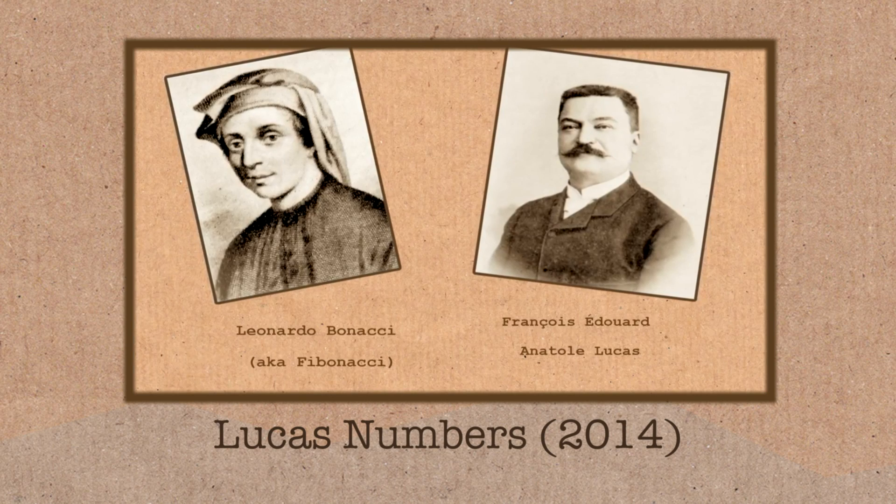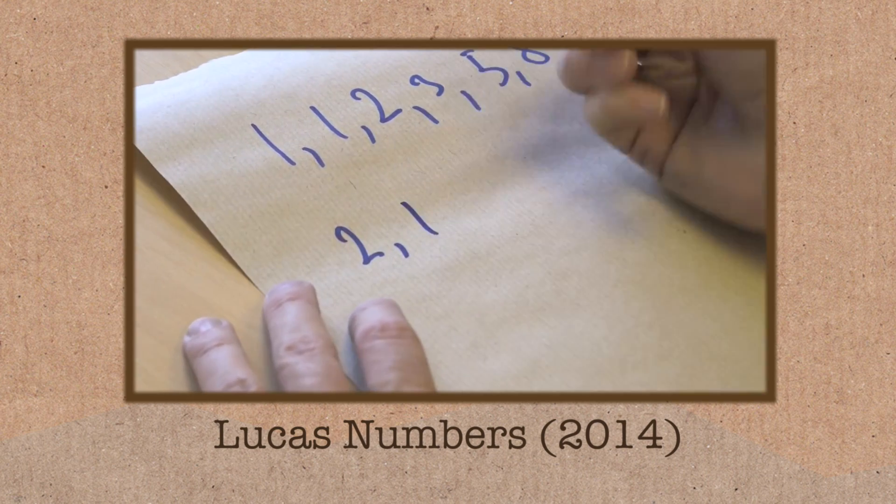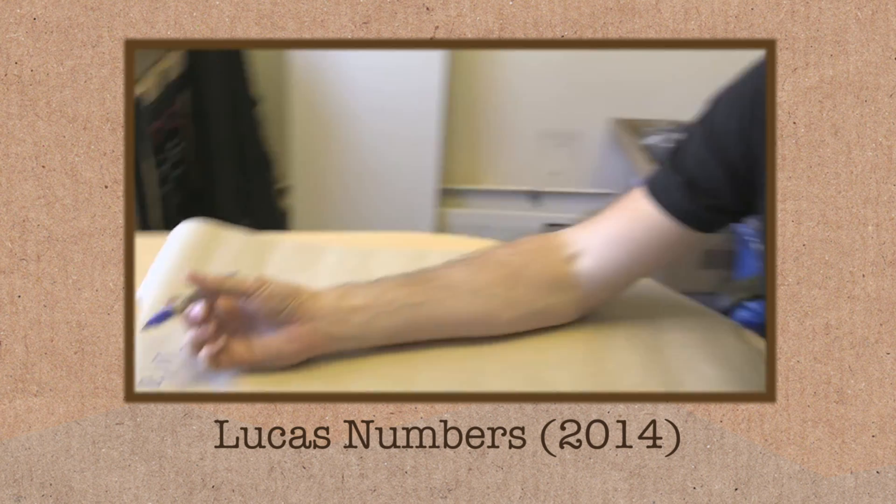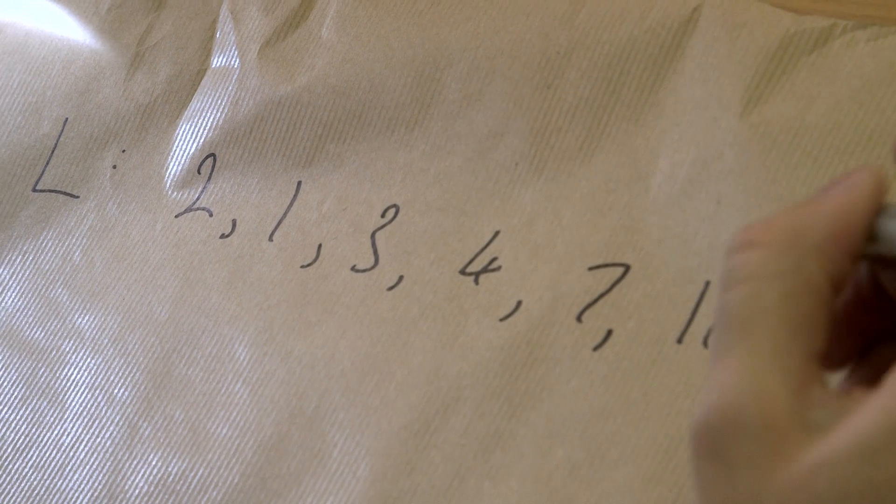Lucas numbers, instead of starting 1, 1, Fibonacci, they start 2, 1, and then they carry on from there, and then you get 3, 4. I'll just put a couple of them down here, so we've got a couple of Lucas numbers to get us going.